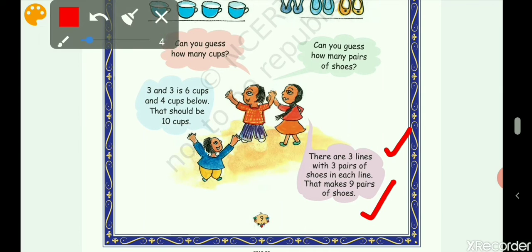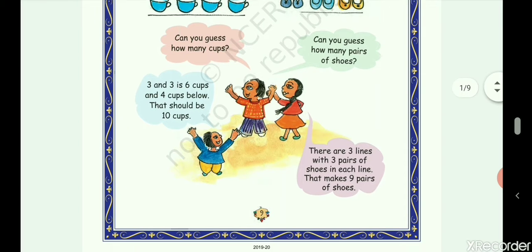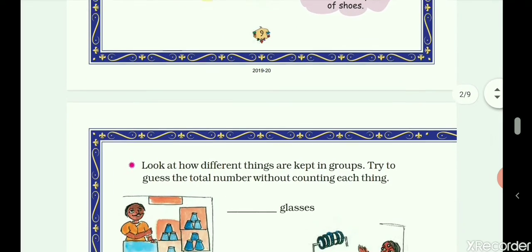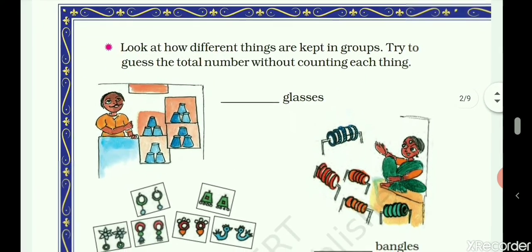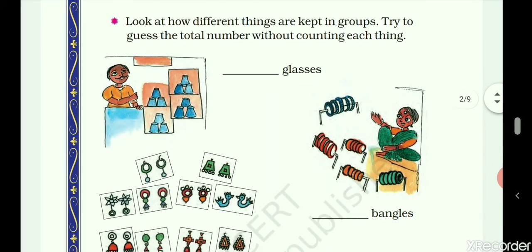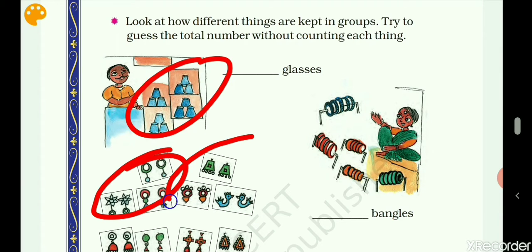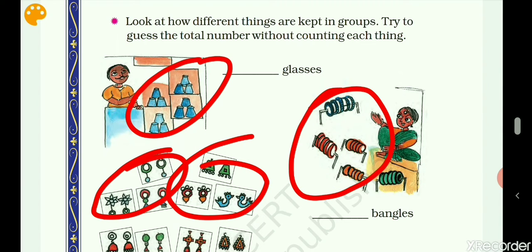There are three lines with three pairs of shoes in each line, they make nine pairs of shoes. Yes, we are also correct. So we have to do like this only. Page number nine completed, now we have next page, page number 10. Look at different types of things that are kept in groups. Try to guess the total number without counting each thing.